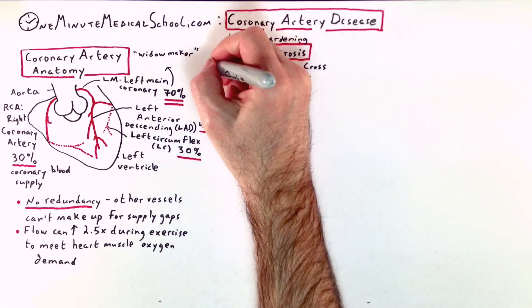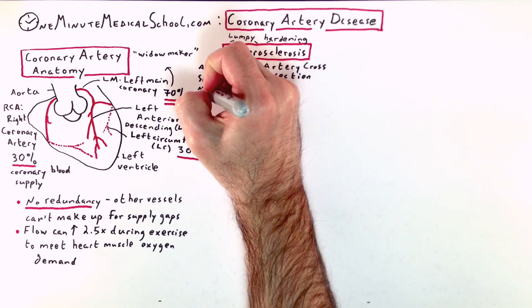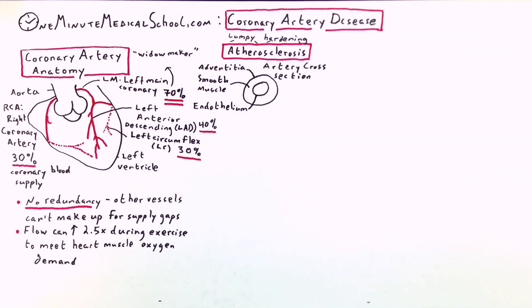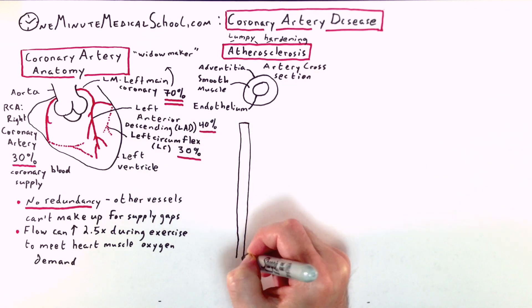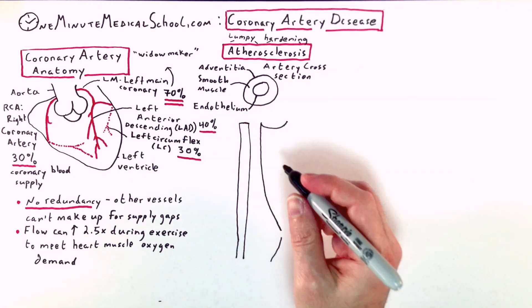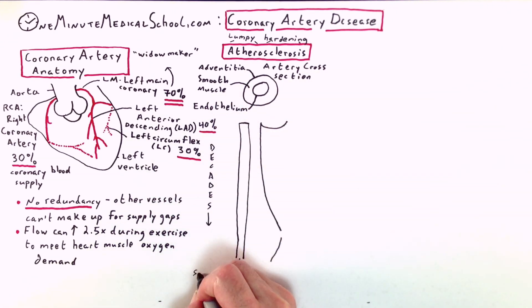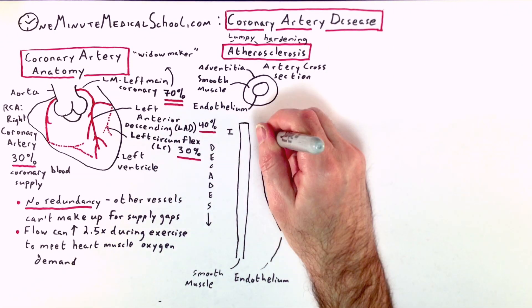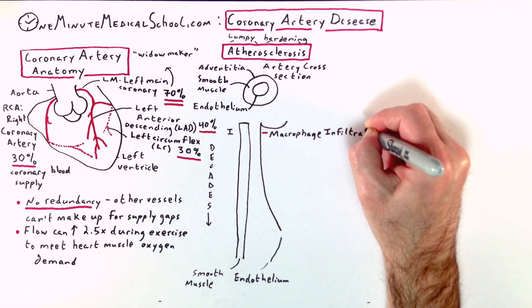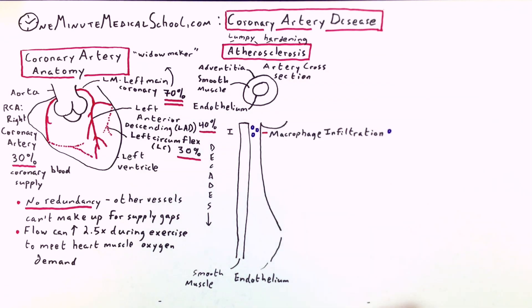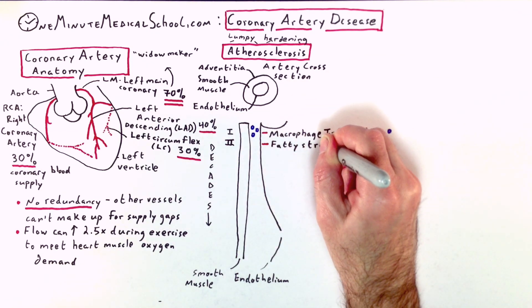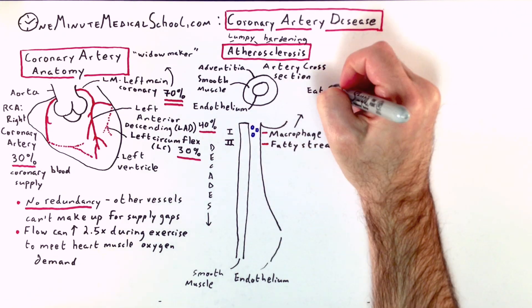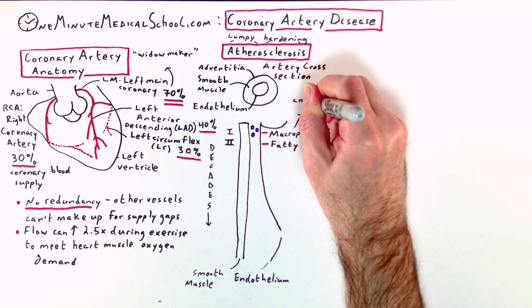Atherosclerosis starts with macrophages from the immune system invading into the endothelial wall, eating fat. This leads to foam cells and a fatty streak, which is visible under a microscope.